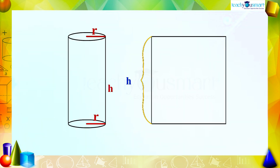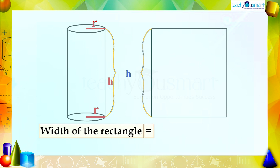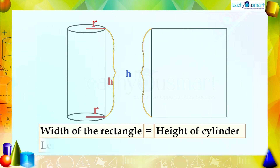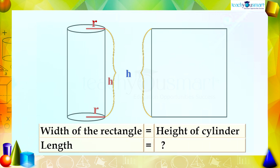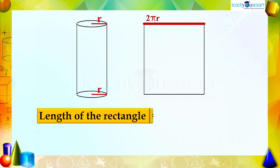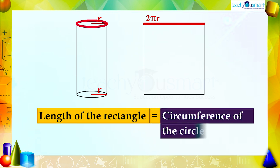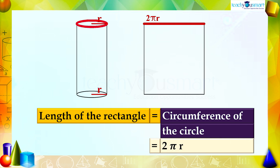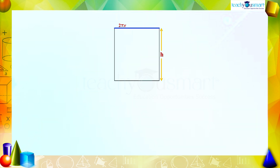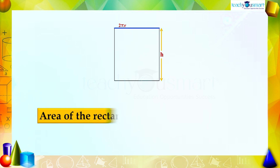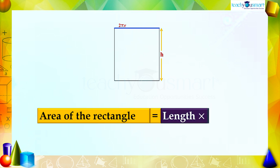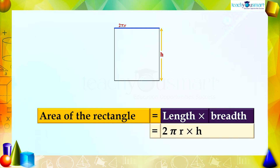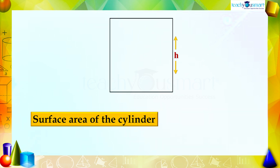We know the width of the rectangle is equal to the height of the cylinder. The length of the rectangle is the circumference of the circle, that is 2πr. Now we can say that the area of the rectangle equals length multiplied by breadth, which equals 2πr multiplied by h, equals 2πrh.